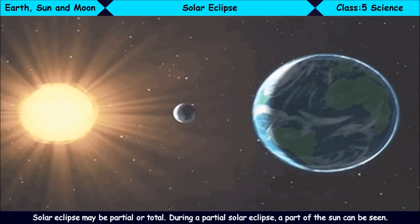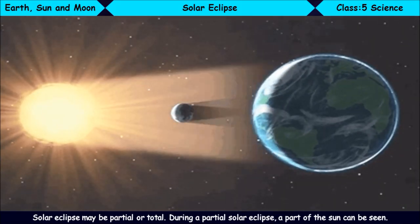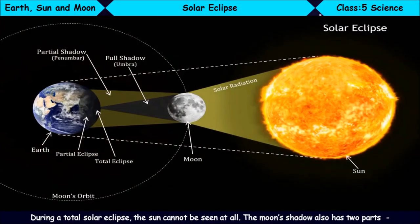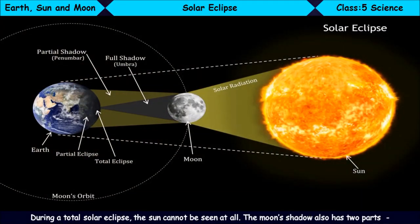During a partial solar eclipse, a part of the Sun can be seen. During a total solar eclipse, the Sun cannot be seen at all.